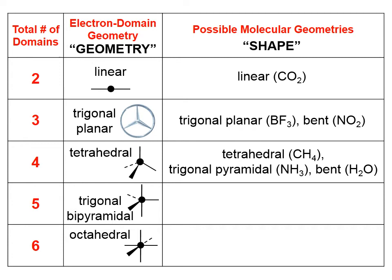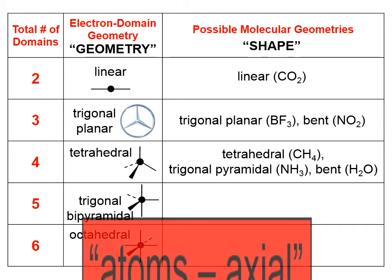For the tetrahedral electron domain geometry: if there are atoms on all four domains, the shape is called tetrahedral. If only three domains have an atom, that's called trigonal pyramidal. If only two domains have atoms — as in the case of water — the molecular geometry is called bent. So water has a tetrahedral electron domain geometry but a bent molecular geometry.